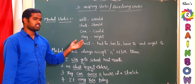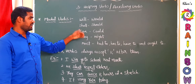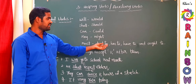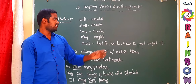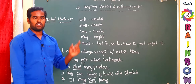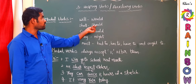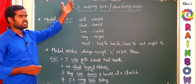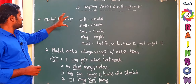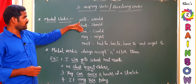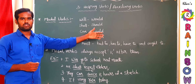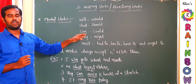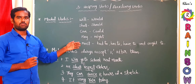'Must' is used to express mandatory things. 'Had to,' 'has to,' and 'have to' express obligations and compulsory work. 'Ought to' is used to advise somebody or give orders — for example, 'You ought to respect elders.' These different functions will be discussed in detail in the next video. The key point: modal verbs — will, would, shall, should, can, could, may, might, must, had to, has to, have to, ought to — all accept only V1.